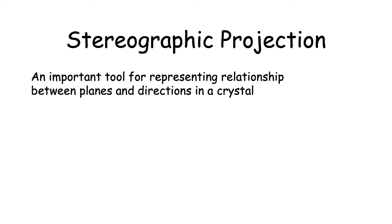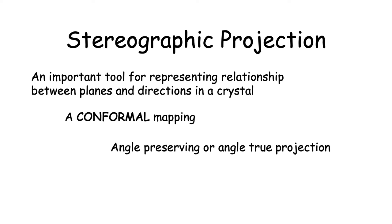Stereographic projection is an important tool for representing relationships between planes and directions in a crystal. It's a conformal mapping, which means it's an angle-preserving projection.